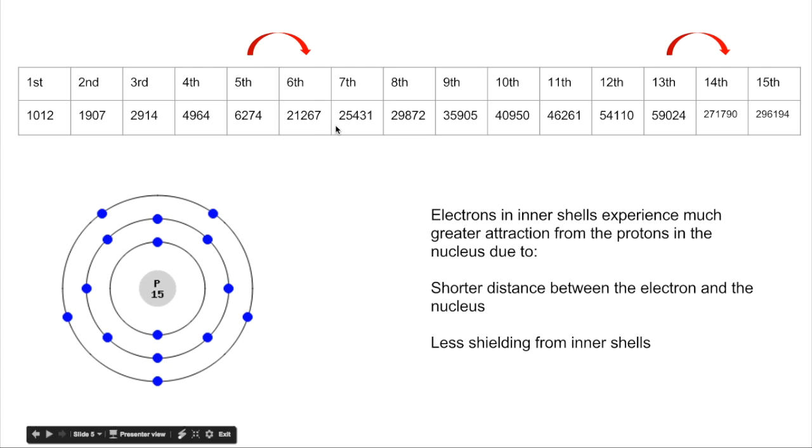And then we have more smaller increments and then going from this 13th to the 14th, you can see that we're going from 59,000 just over up to 271,000, nearly 272,000 kilojoules per mole. So that's an enormous jump up in energy. So what's going on?